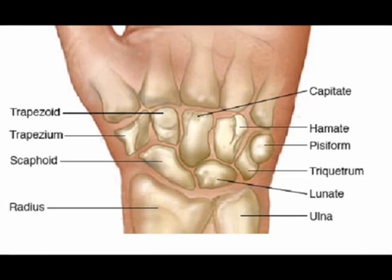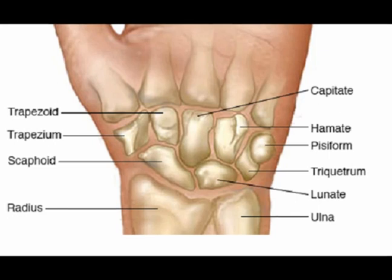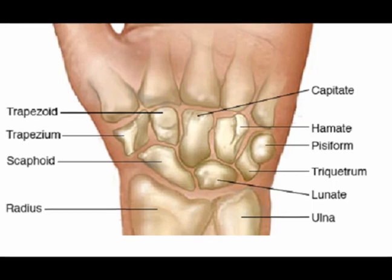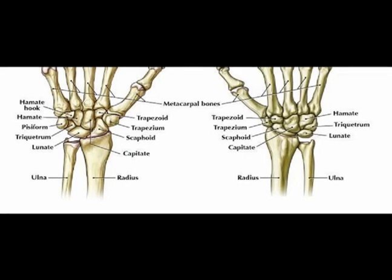The trapezium lies between the scaphoid and the base of the first metacarpal bone and has a saddle-shaped facet for articulation with the first metacarpal, and provides a site for a few tendons and ligaments to either pass through or attach. The trapezoid bone is located between the trapezium and the capitate. The capitate is the largest and most central carpal bone with articulations to several bones and attachments to several intercarpal ligaments.